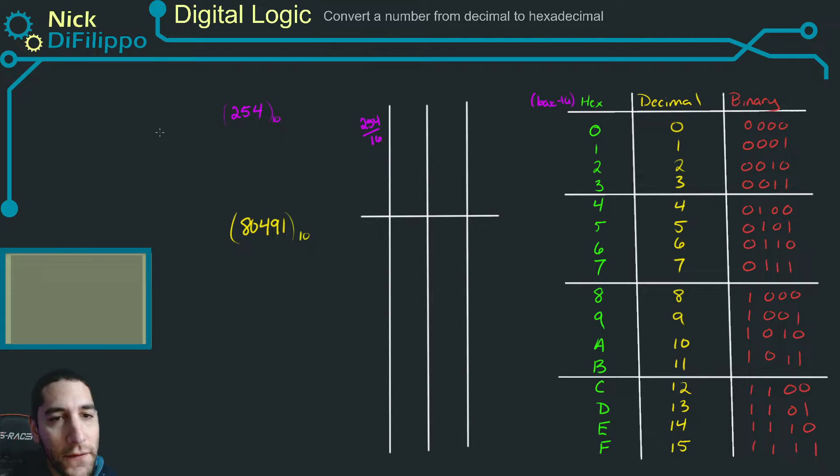When I do this conversion, I want to make note of two things. I want to make note of the integer that 16 will go into 254 by, and I want to know what my remainder is.